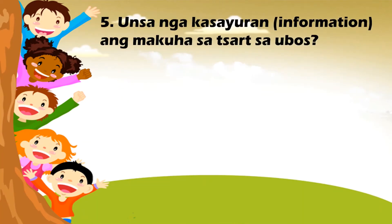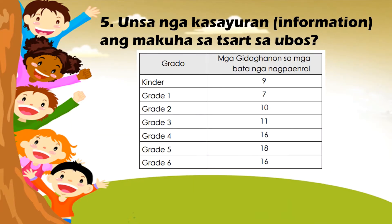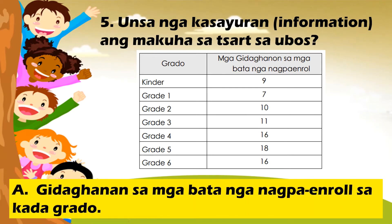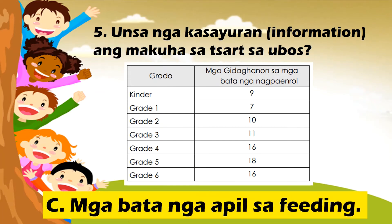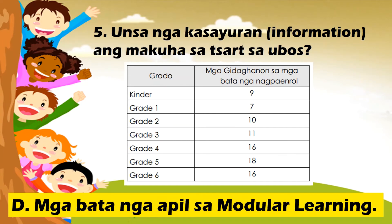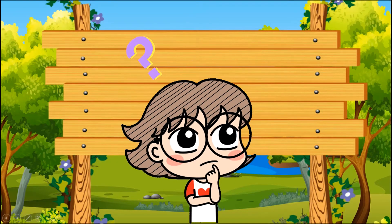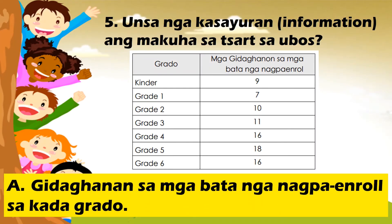Mga masustansyang pagkaon. Unsa ang makita sa chart sa ubos? A. Gidaghanon sa mga bata nga nagpa-enroll sa kada grado. B. Mga laba sa mga bata. C. Mga bata nga apil sa feeding program. D. Mga bata nga apil sa modular learning. Letra A. Gidaghanon sa mga bata nga nagpa-enroll sa kada grado.